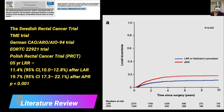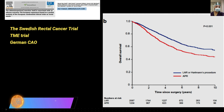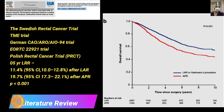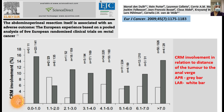As depicted in the graph, the local recurrence rate was higher and statistically significant after APR as compared to LAR, and even the survival curves were better for patients who underwent LAR compared to APR. Analyzing the data carefully, the pictorial depiction in the same paper shows CRM involvement in relation to distance of tumor. The gray represents APR and white represents LAR. When the tumor is within one centimeter of the anal verge, all were CRM positive. Moving to 1.1 to 2 centimeters, if the surgeon persisted for LAR, the CRM positivity rate for LAR was very high compared to APR.